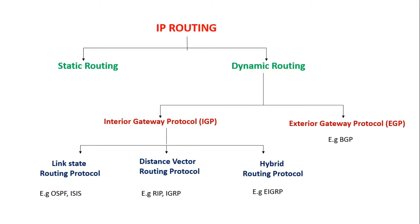The main advantage of dynamic routing is it's suitable for all types of networks, and even if the network is huge or big, it's very easy to implement. It automatically builds the routing table used for routing packets from one network to another, and it reroutes traffic even in case of link failures.